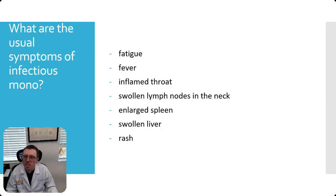What does infectious mono look like? The typical symptoms are fatigue, fever, inflamed throat, swelling of the lymph nodes especially of the neck. Your spleen can get enlarged, your liver can get enlarged, and a rash.